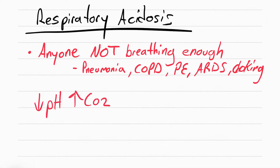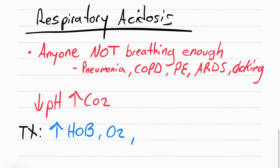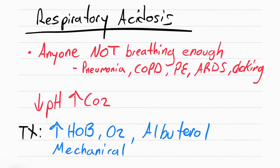With respiratory acidosis, the pH will go down and the CO2 will go up — make sure you take note of those arrows. For treatment, since the issue is not being able to breathe, we have to help them breathe. We can raise the head of the bed, give them oxygen, give a medication called albuterol to open up the bronchioles, and if necessary, perform mechanical ventilation — where the doctor intubates the patient and connects them to a machine to help them breathe.